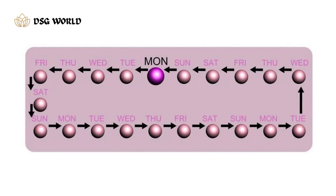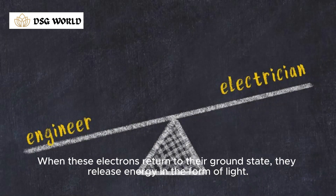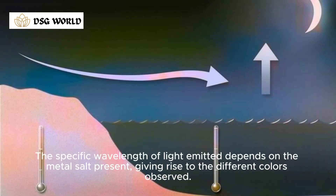Color production: as the metal salts are heated, their electrons become excited and move to higher energy levels. When these electrons return to their ground state, they release energy in the form of light. The specific wavelength of light emitted depends on the metal salt present, giving rise to the different colors observed.